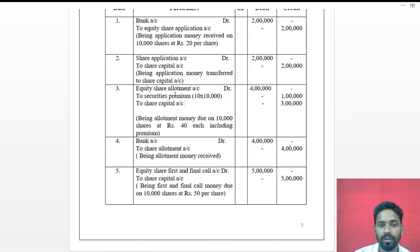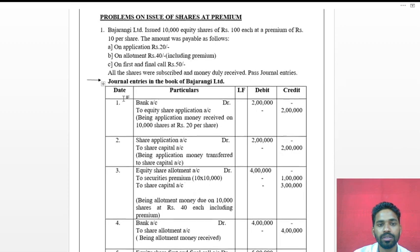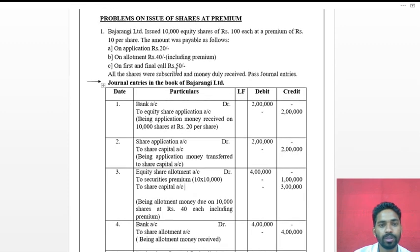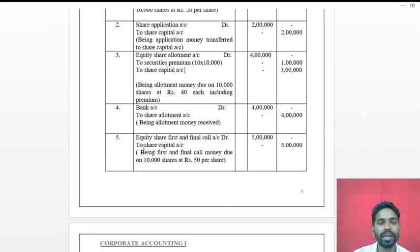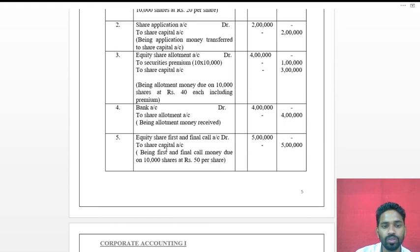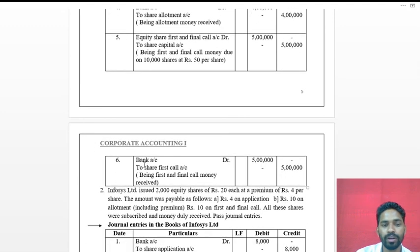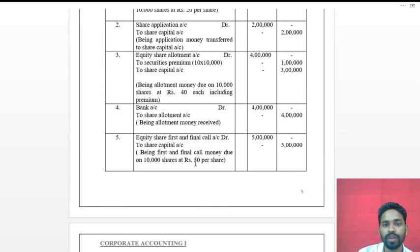For the first and final call: Equity Shares First and Final Call Account debit rupees 5 lakh (50 × 10,000), to Share Capital Account credit rupees 5 lakh — being first and final call money due on 10,000 shares at rupees 50 per share. Then: Bank Account debit rupees 5 lakh, to Share First and Final Call Account credit rupees 5 lakh — being first and final call money received.